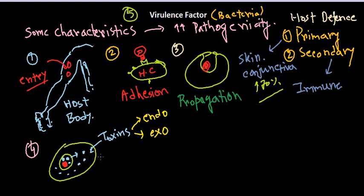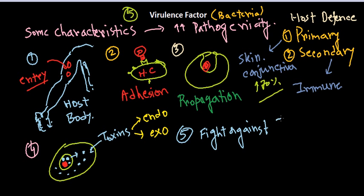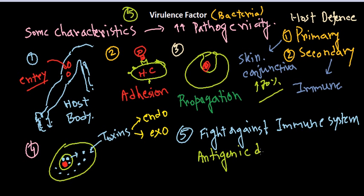After damaging the host cell, the bacteria invade the secondary defense. Throughout this process, it has destroyed the primary defense, entered the body, killed cells, and now it moves against the secondary defense — fighting against the immune system. This final stage involves going against or fighting the immune system. One mechanism for this is antigenic drift.